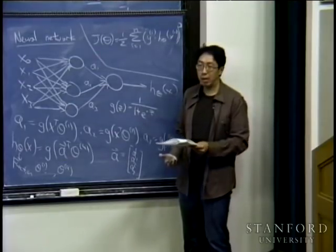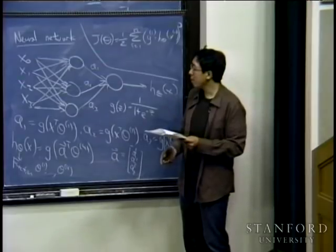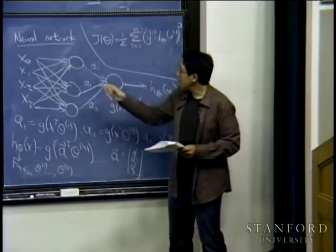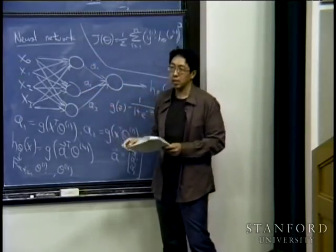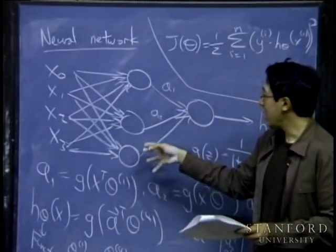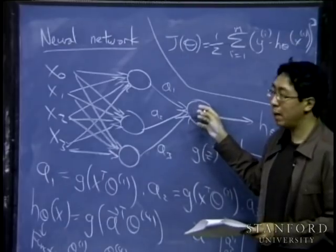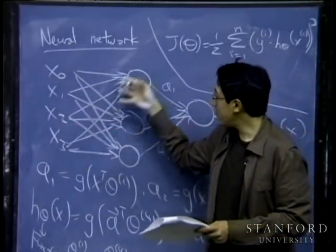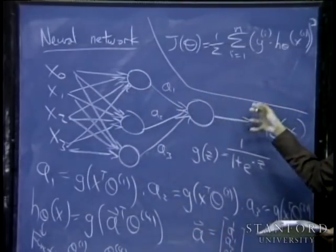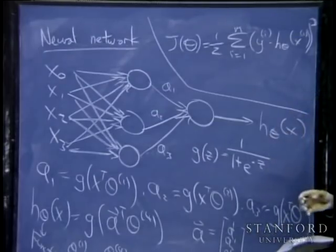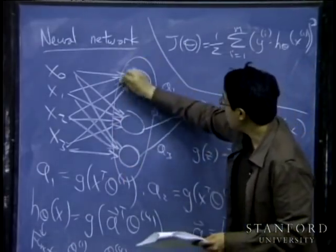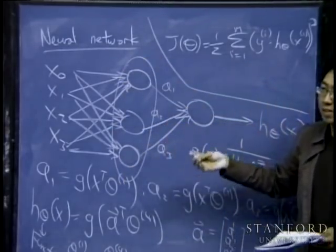One interesting thing about neural networks is that you can look at what the intermediate nodes are computing—these are called hidden layers. You can have inputs feed into computation units, then into more layers, and finally an output layer. Let me show you a video to get a better sense of what neural networks might be doing.